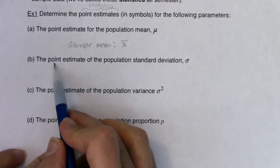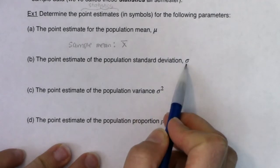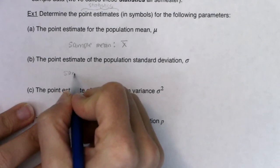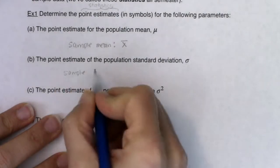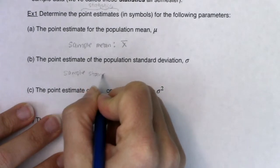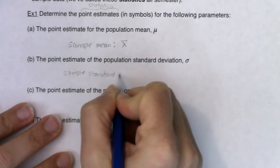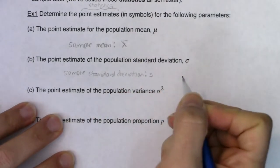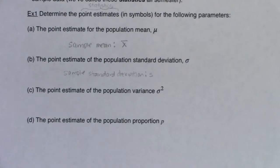The point estimate of the population standard deviation σ, lowercase sigma - what is the sample standard deviation? That's what the point estimate is, one number. What symbol do we have for sample standard deviation? We've been calling that s. Recall statistics - they have letters that come from our alphabet, and typically parameters have numbers that come from the Greek alphabet. There's exceptions to that, but that's the gist of it.